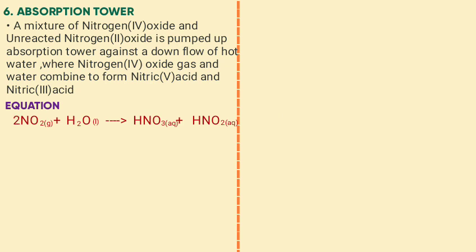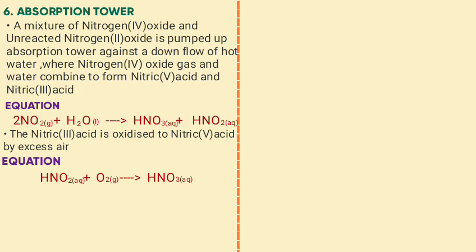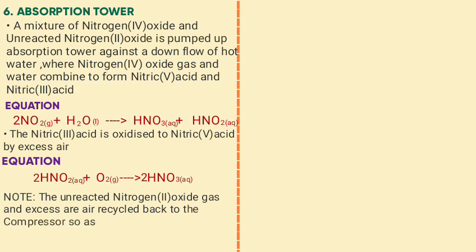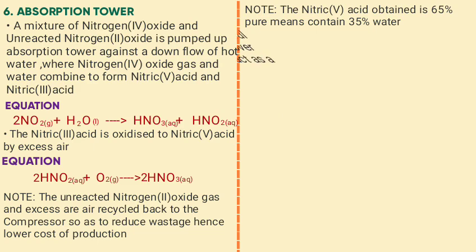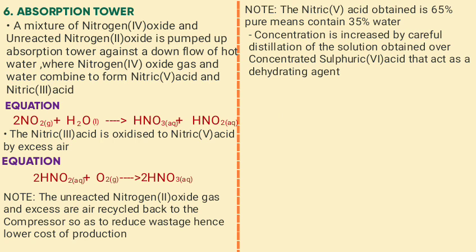The equation for the absorption tower is: 2NO2 + H2O → HNO3 + HNO2. The nitrous acid formed is oxidized to nitric acid by excess air: 2HNO2 + O2 → 2HNO3. The unreacted nitrogen monoxide and air are recycled to the compressor to minimize wastage and reduce the cost of production. The nitric acid obtained by this process is 65% pure, containing 35% water.